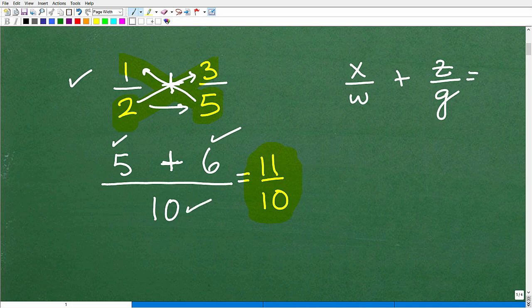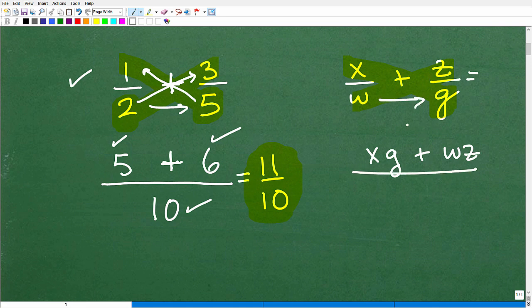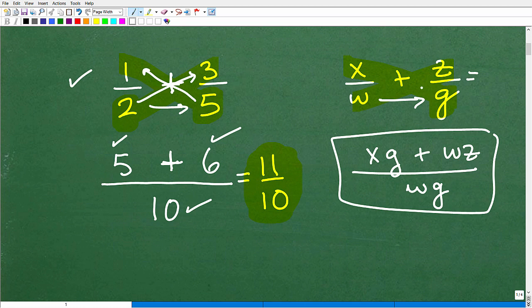So let's go ahead and do this problem here. It works the same way with variables. So it's going to be x times g, that's xg, plus w times z, that's wz in algebra. That's how we represent multiplication. Over wg. And that's it. So if you understand this, then you can do this. So it was this times this, this times this, over w times g. Now, this is the tool that I'm going to be using in this problem.